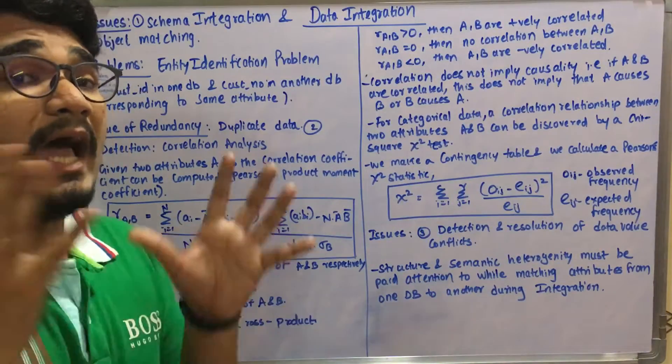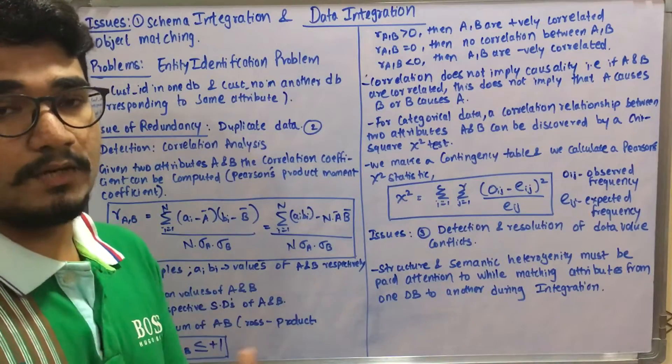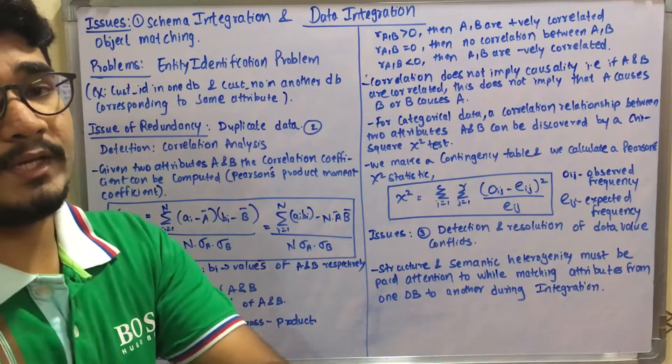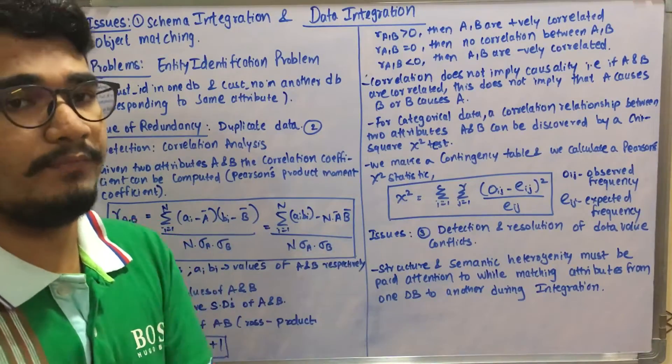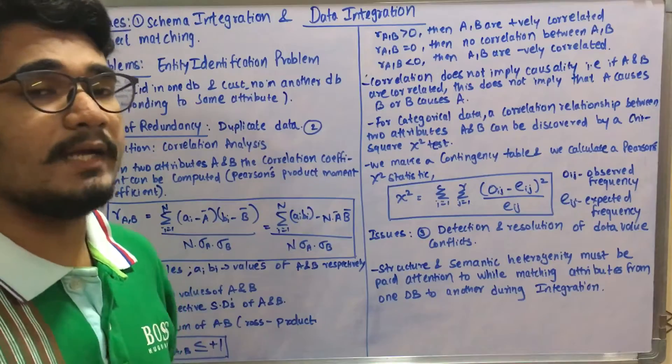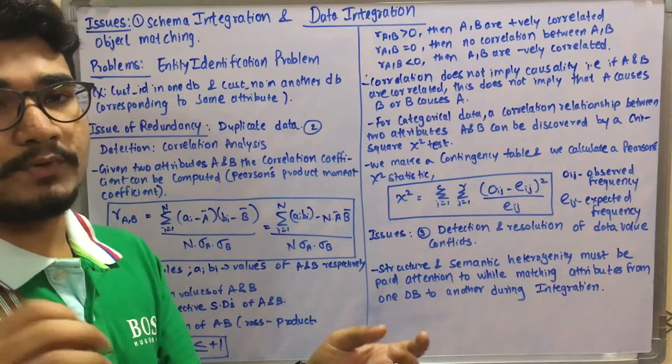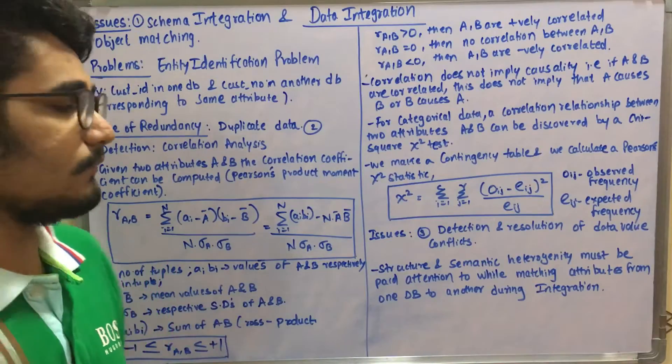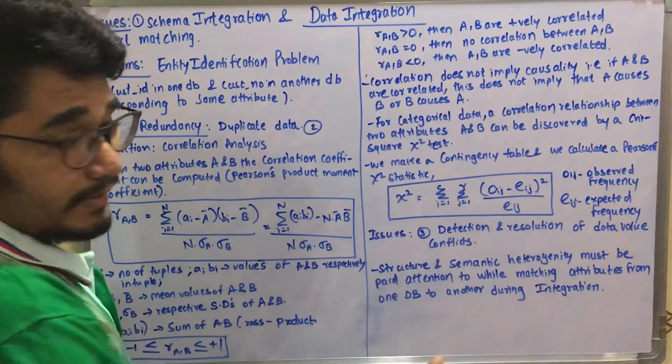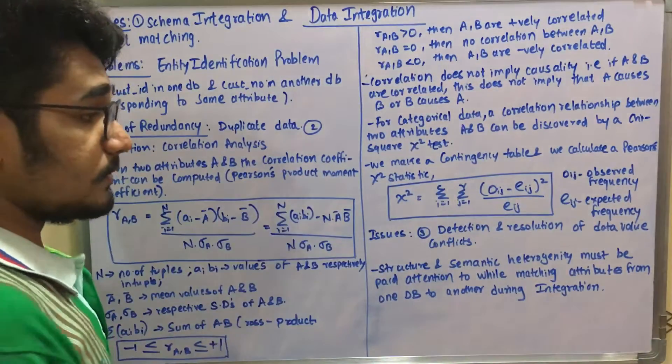The meaning of that particular data from different sources has to be the same and should not vary across different measurements - imperial units, British units, SI units, CGI units. For currency or trading from different countries, you have to lay a particular standard. These two things - structure and semantic heterogeneity - must be paid attention while matching attributes during data integration.